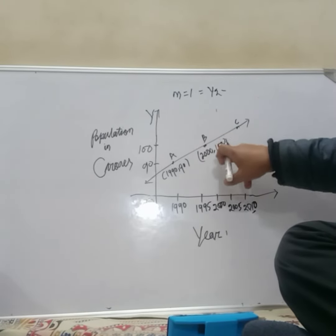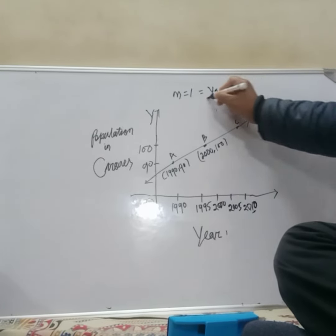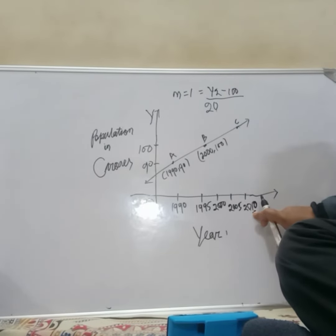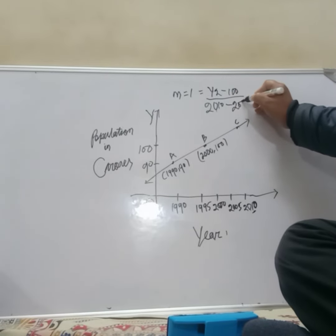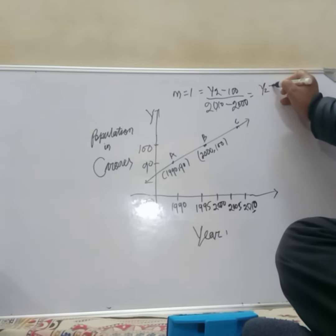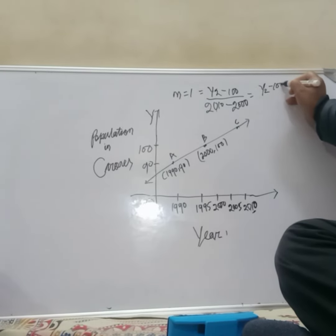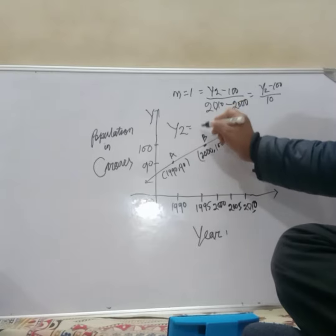Divided by 2010 x value we have given, so 2010 minus 2000. So it will be y2 minus 100 divided by 10. Therefore y2 will be 100 plus 10, which equals 110 crores.